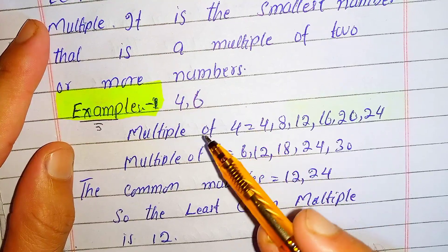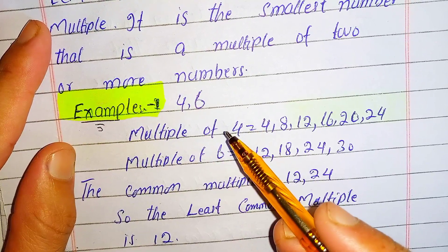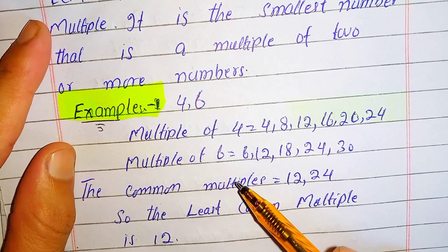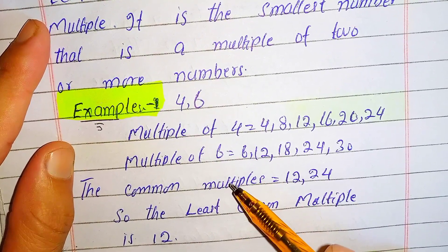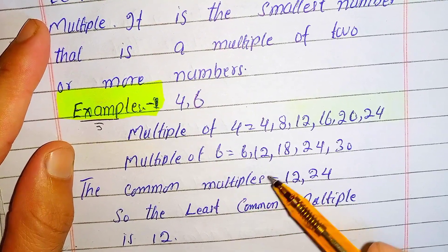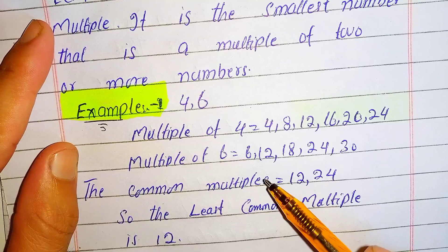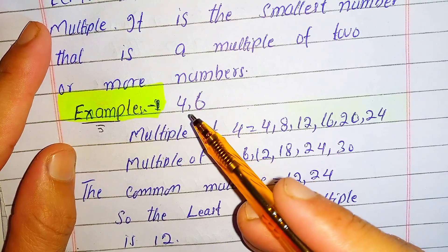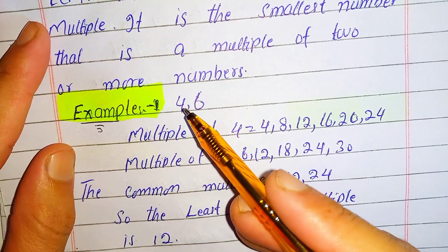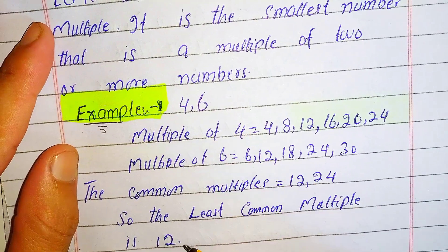Right — first we found the multiples of these numbers, then looked for the common multiples, and then the least common multiple. So the least common multiple, or LCM, of 4 and 6 is 12.